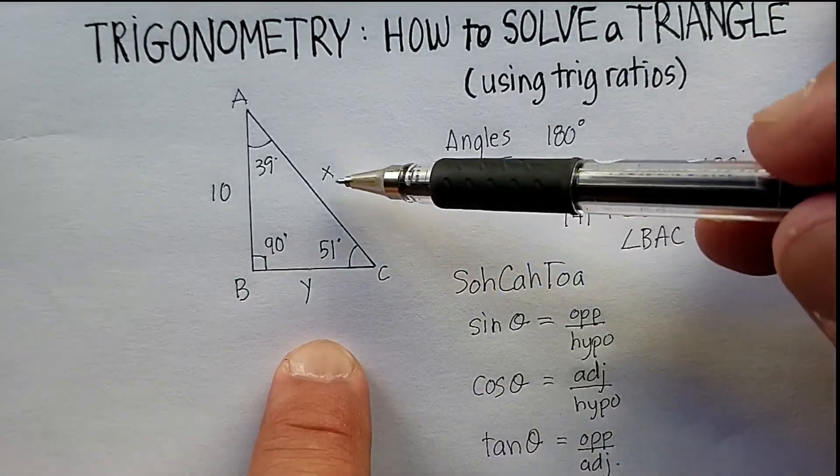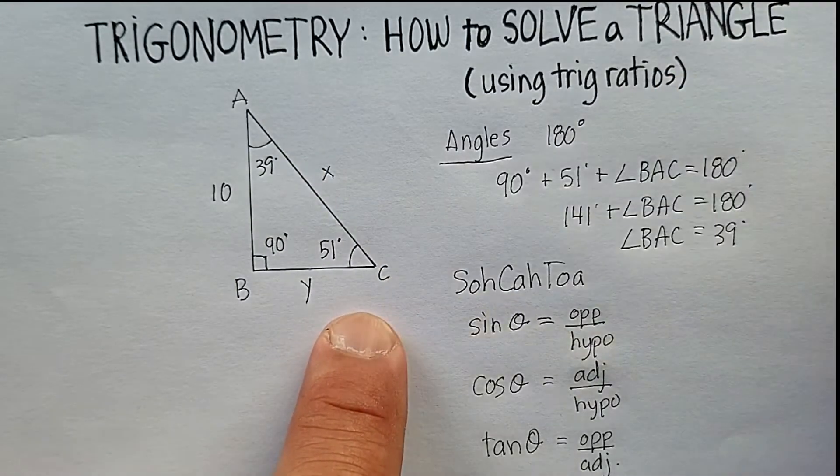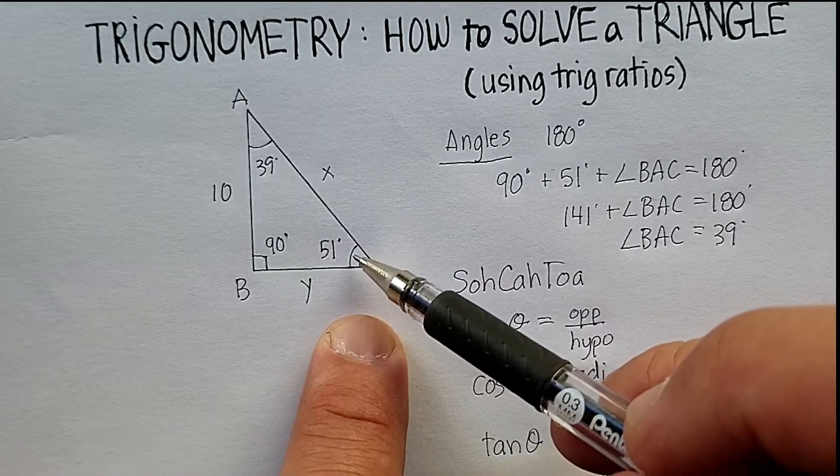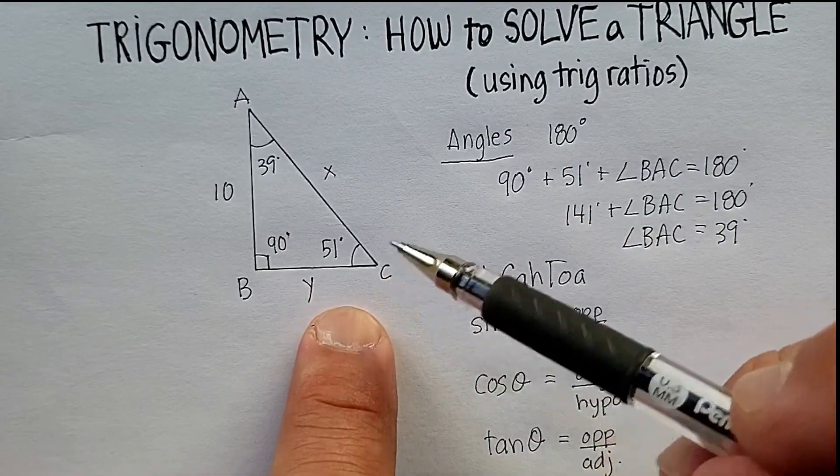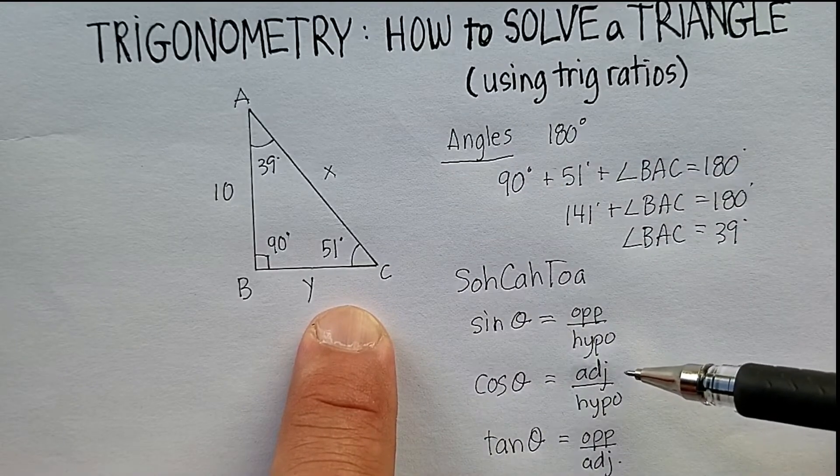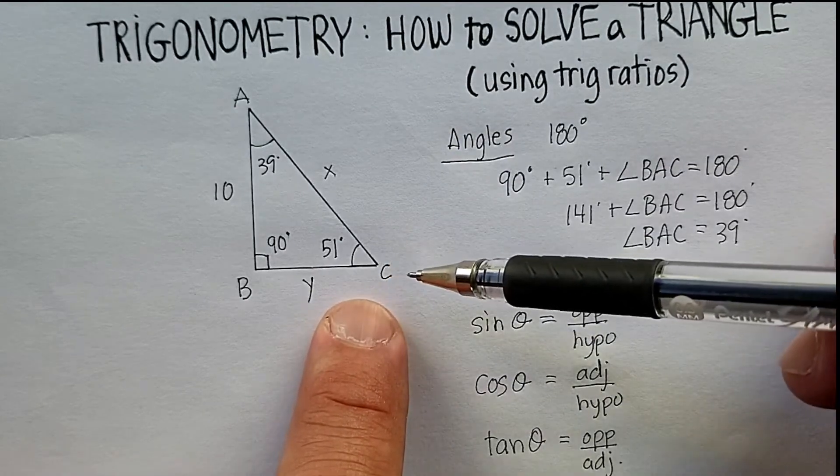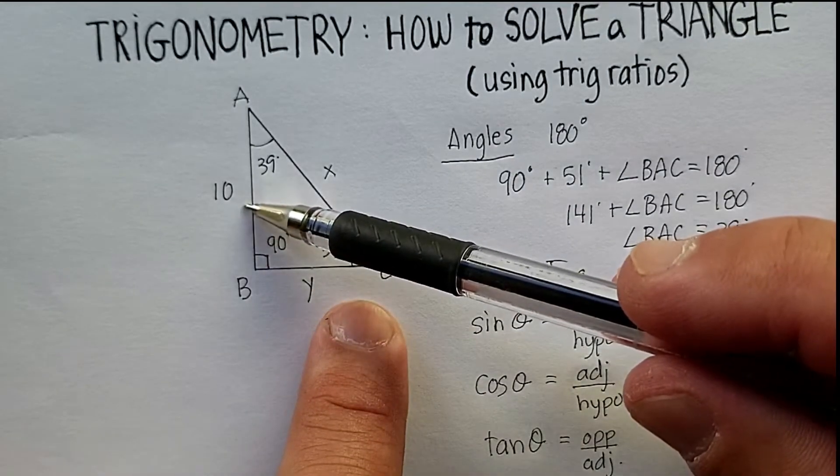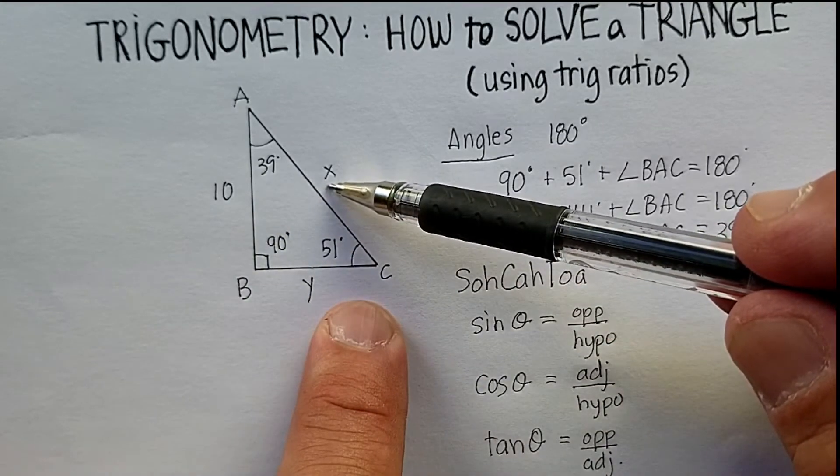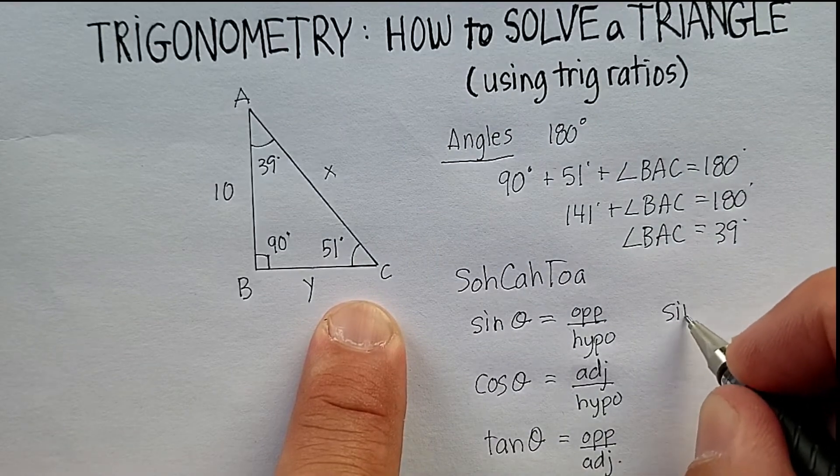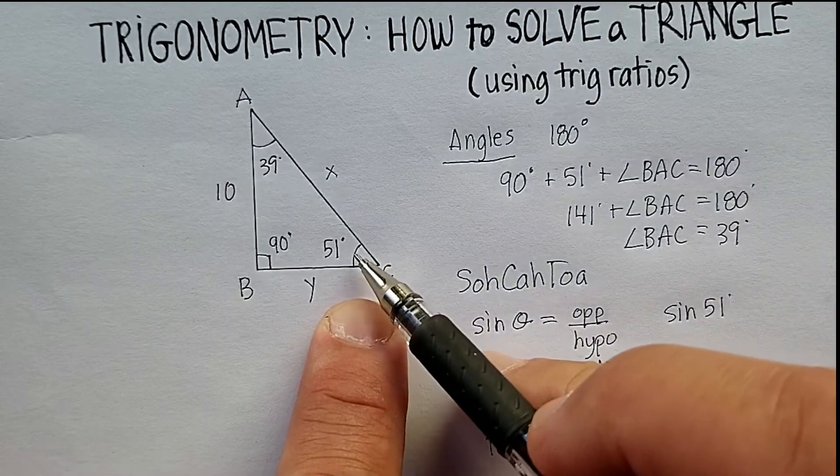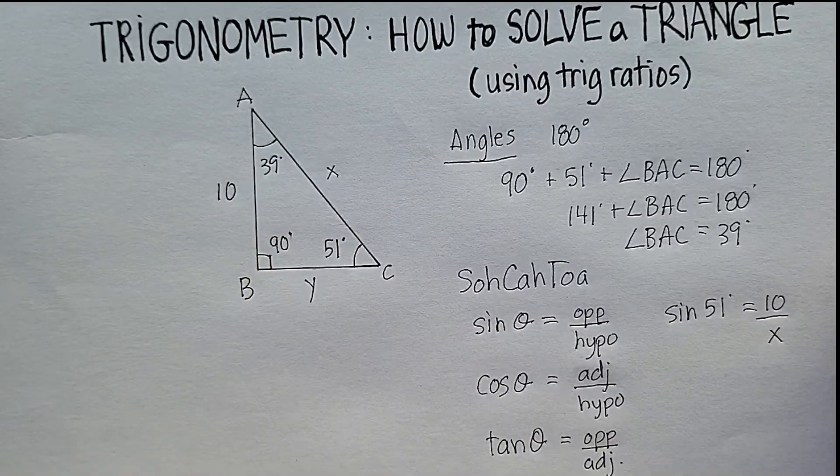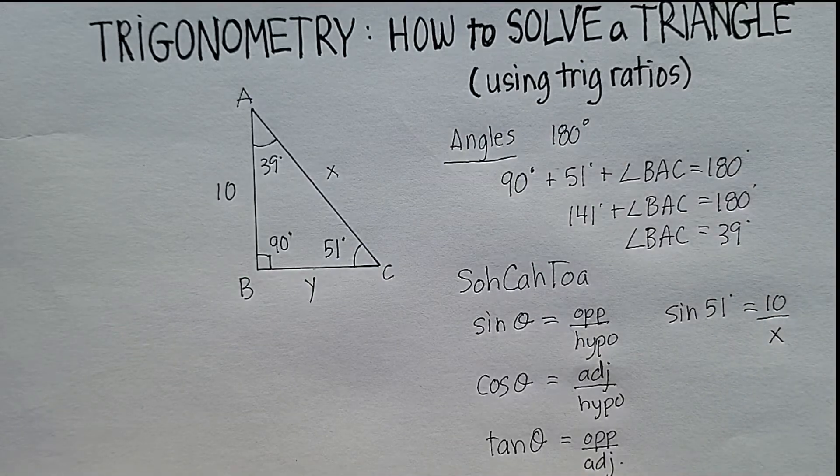Now, if we want to find, for example, side AC, we have a couple of options here. We're going to use the sine function. The sine of 51 should be equal to the opposite side over the hypotenuse. So, we're going to say that the sine of 51 degrees is equal to the opposite side, which is 10, over the hypotenuse, which we do not know, which is what we're looking for. Now, in order to get that, we need to look up the sine of 51 degrees, and this is where we go to our calculator.